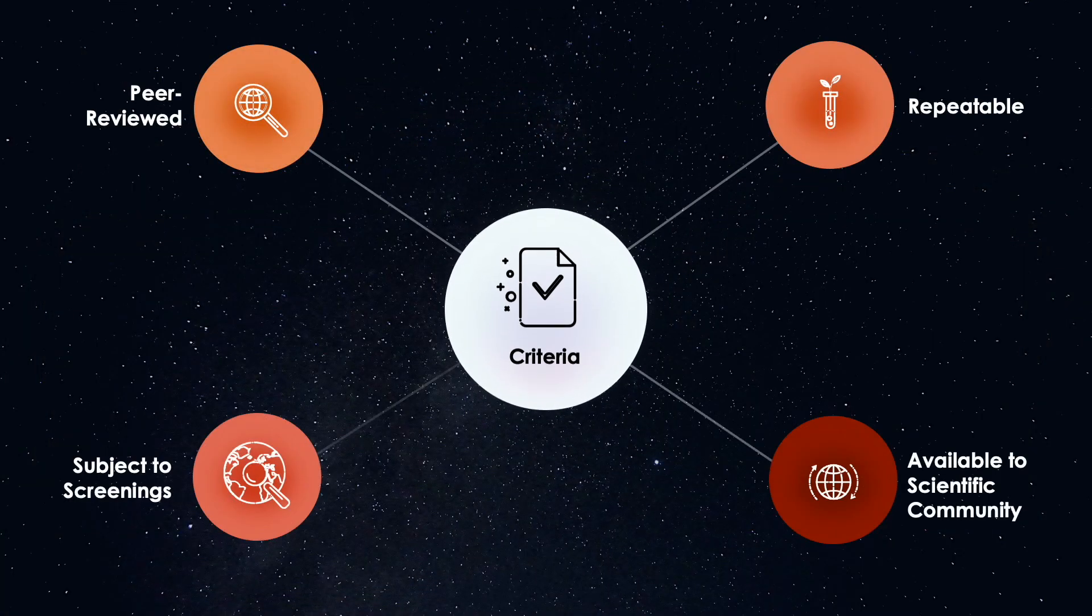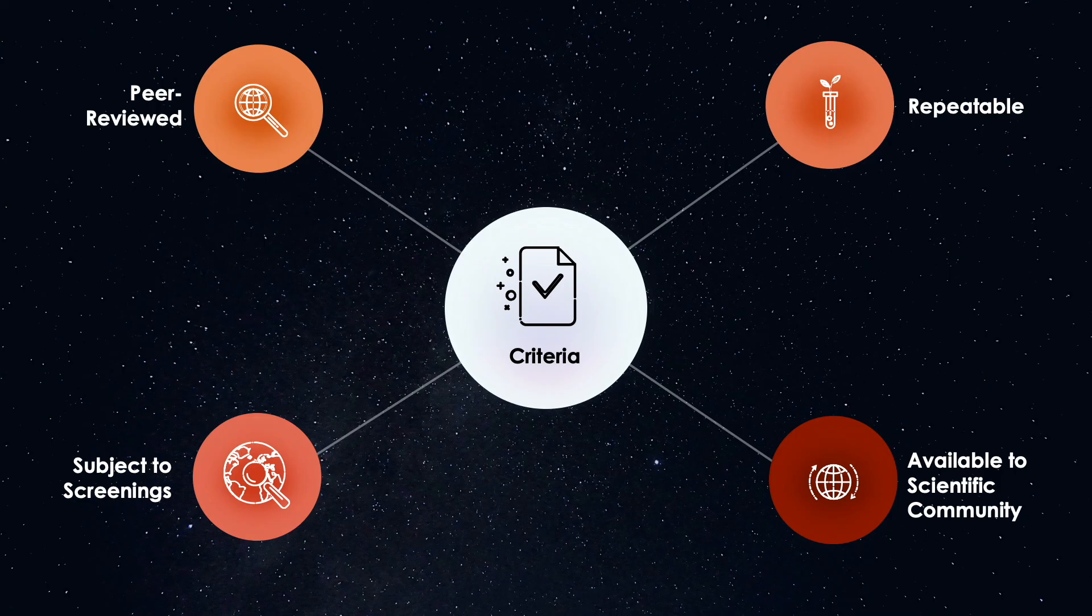Furthermore, according to the Council of Biology in 1968, the research must first be peer-reviewed. Secondly, be presented clearly so that peers can repeat the experiments and verify the conclusions. Thirdly, it must be available to the scientific community. And lastly, these papers must be subject to screening by independent scientific institutions.